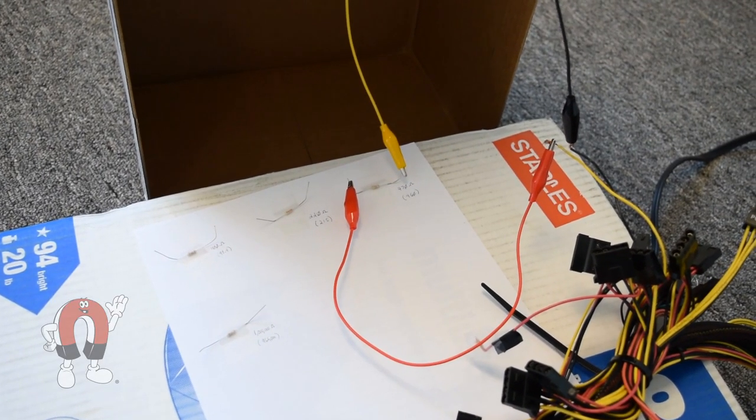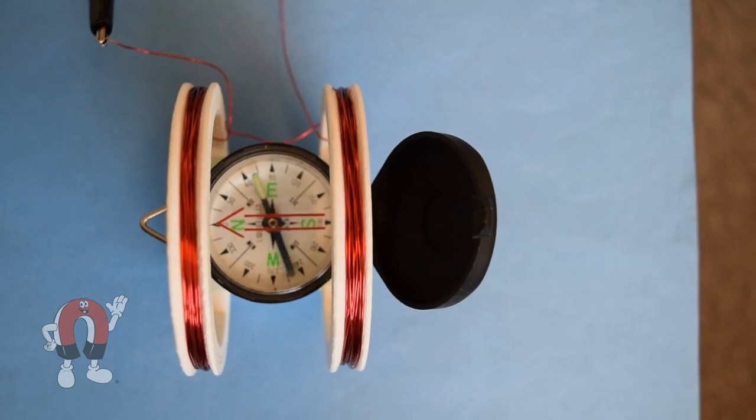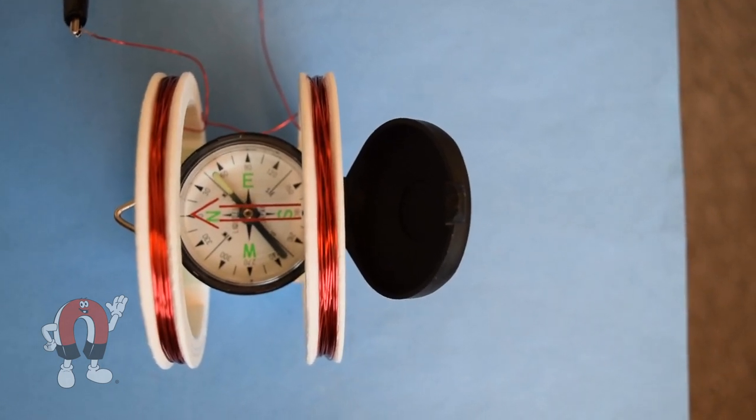With a 470 ohm resistor, the compass swings just over 30 degrees.